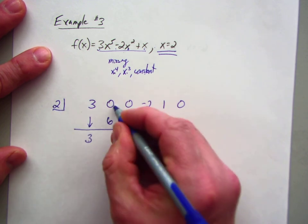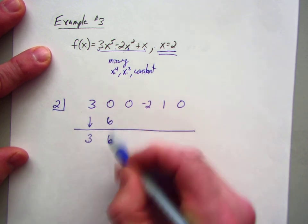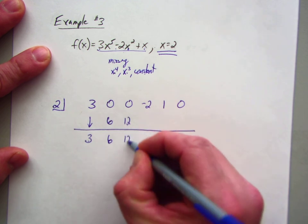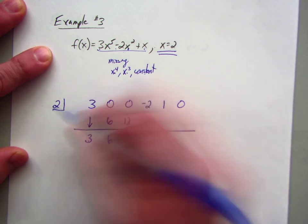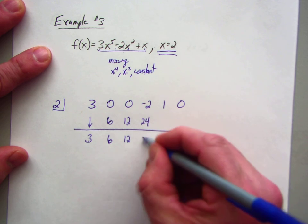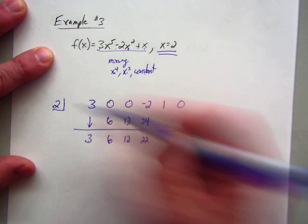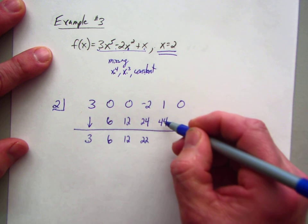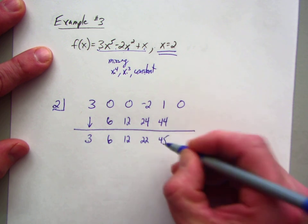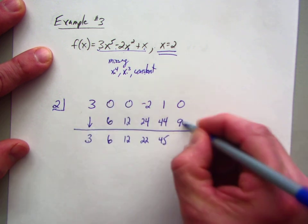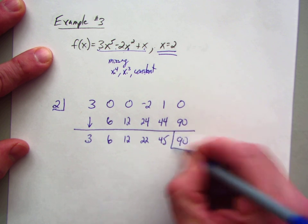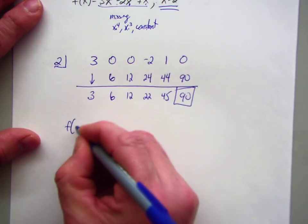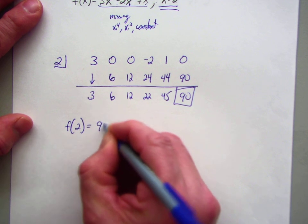3 times 2 is 6. Add going down. 6 times 2 is 12. Add going down. 12 times 2 is 24. Add going down. 22 times 2 is 44. Then add going down. 45 times 2. Then add going down. And there's your answer.